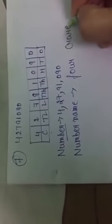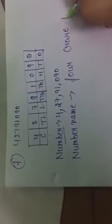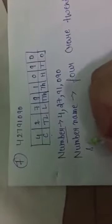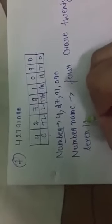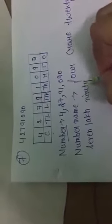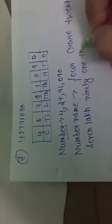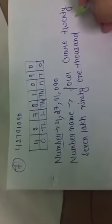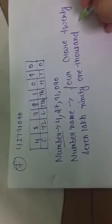Now write down the number name: four crore, twenty-seven lakh, ninety-one thousand, ninety.